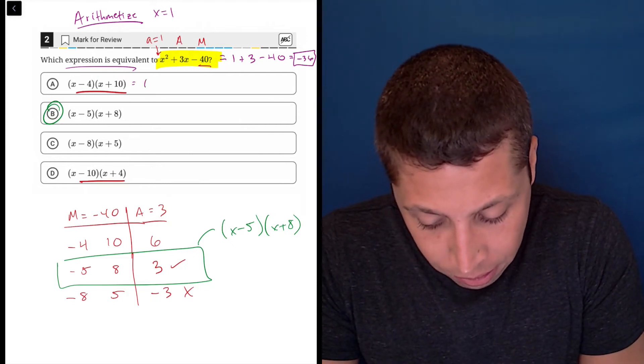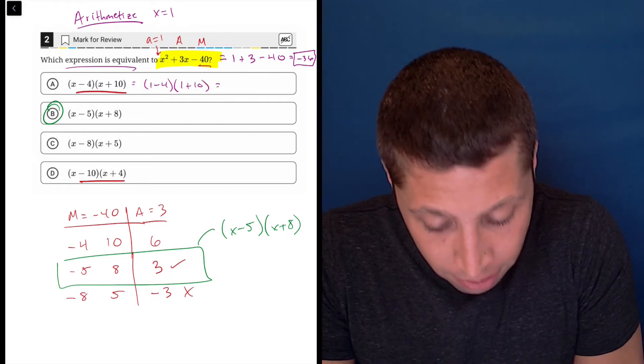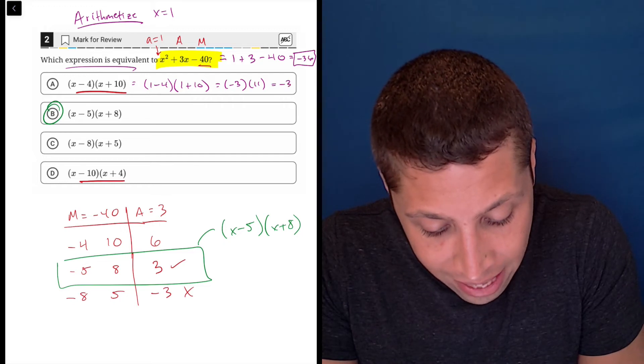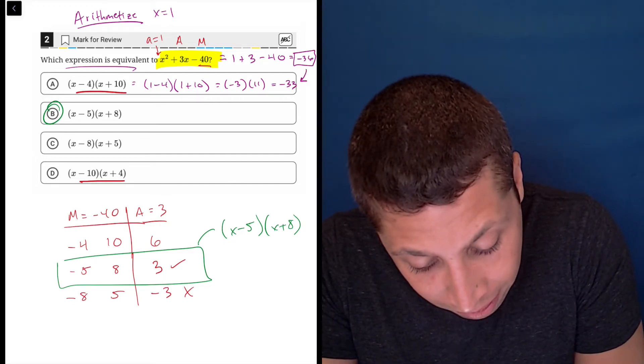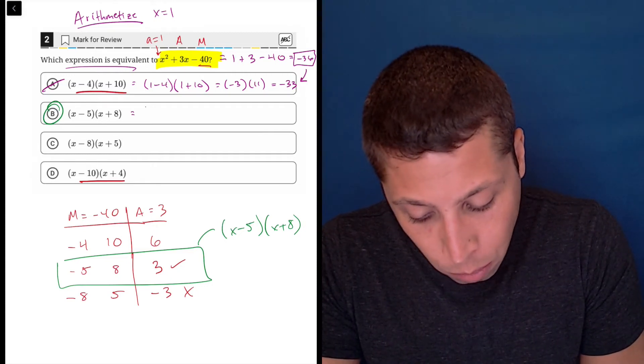So if we go through the choices now, we would have in this case, one minus four times one plus 10. So one minus four is negative three, one plus 10 is 11. So that's negative 33, not negative 36. That would mean that that choice is wrong, but watch what happens when we do it in choice B.